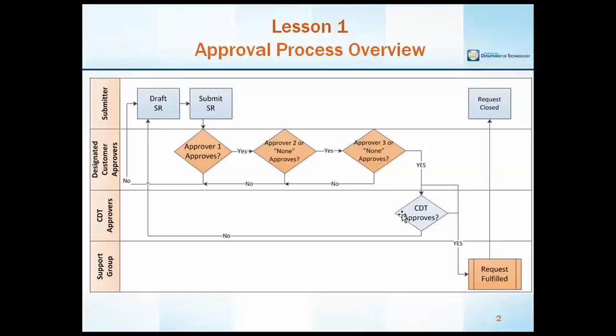After the submitter's designated approvers approve the service request, it is then sent to a layer of approvers at CDT. This could include the service supervisor, CDT security, or CDT financials department, depending on the type of service request. Once approved, the request is sent to the CDT support group or groups that will fulfill the request.